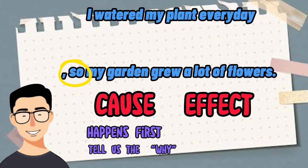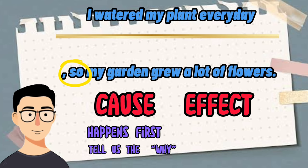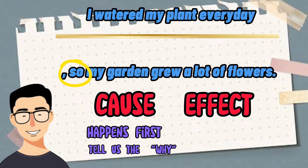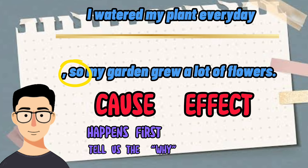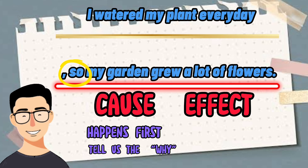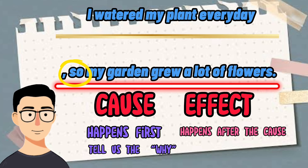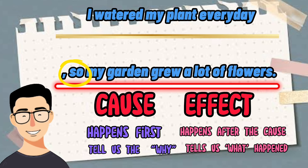The cause must be: I watered the plants every day. And the effect must be: my garden grew a lot of flowers. Because it happens after the cause and tells us what happened.